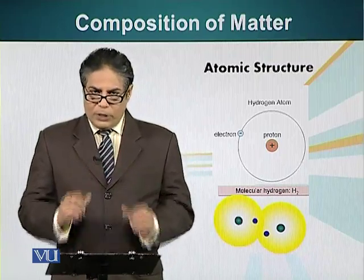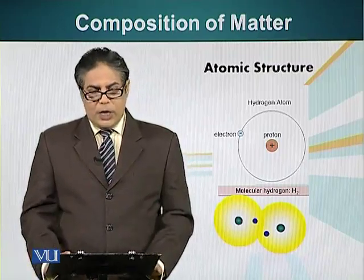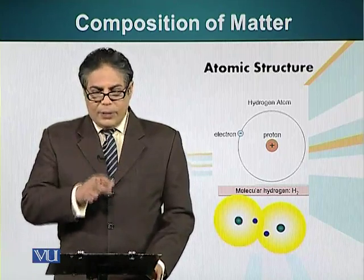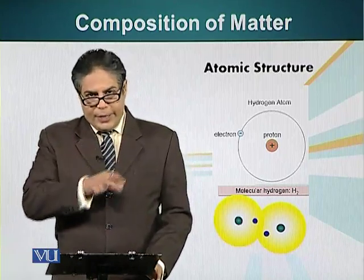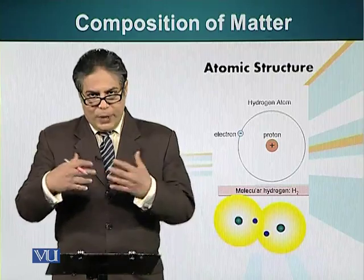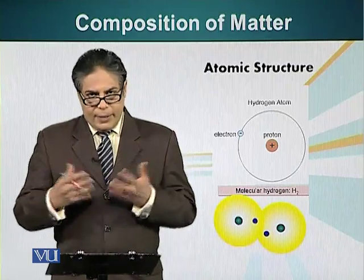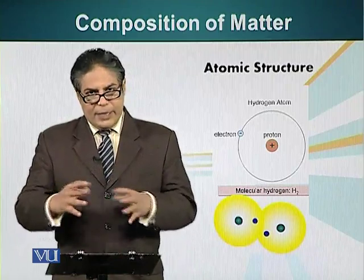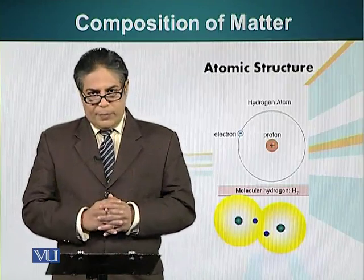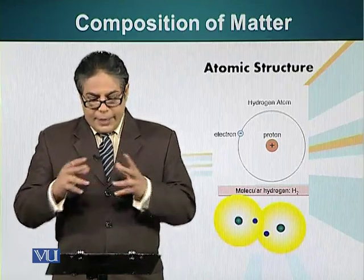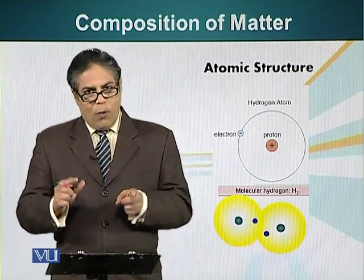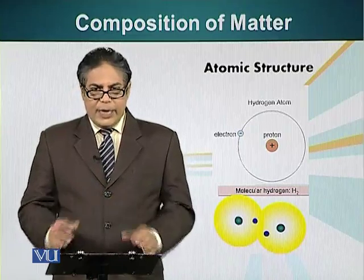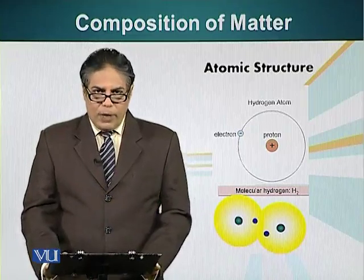Two electrons are now present in the orbital around the positively charged nucleus. When these two electrons revolve in that orbital, they give stability to the structure. This type of bond, which is formed by sharing two electrons, is called a covalent bond.